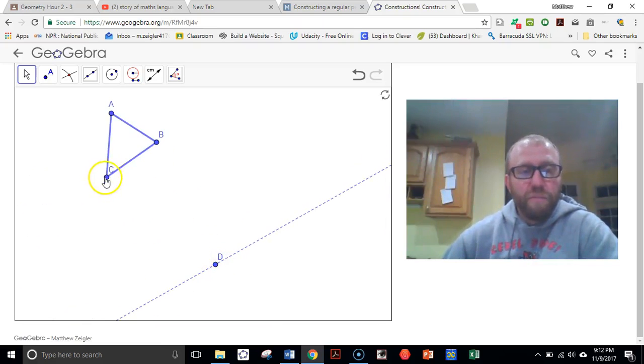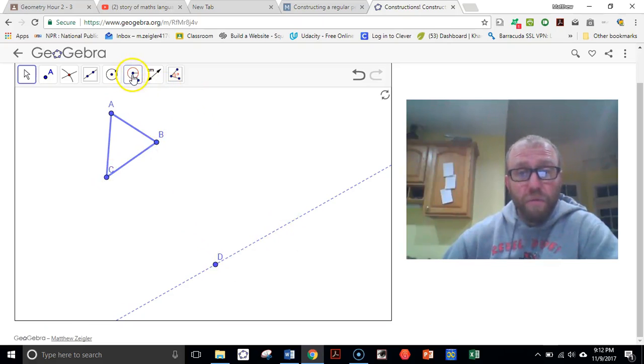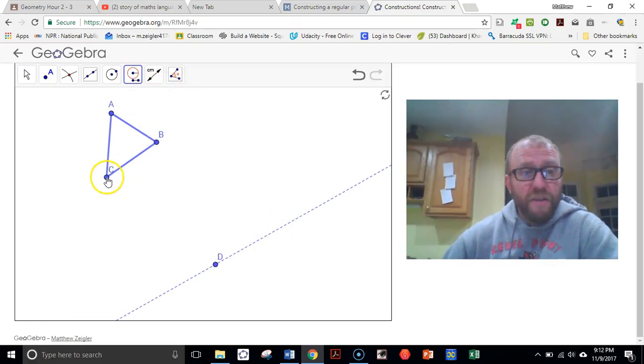All right. So first thing I'm going to do is I'm going to recreate this segment, CB, on this line right over here. I'm going to use my compass tool to do that. So I'll set the distance, the compass, to the distance between B and C. And I'm just going to place it down here on point D.